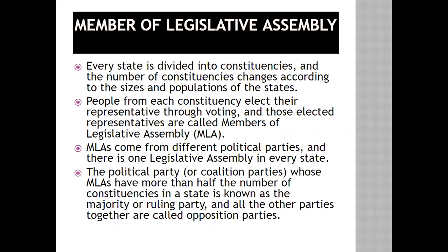Member of Legislative Assembly: Every state is divided into constituencies, and the number of constituencies changes according to the sizes and population of the states. People from each constituency elect their representative through voting, and those elected representatives are called Members of Legislative Assembly. MLAs come from different political parties and there is one legislative assembly in every state. The political party or coalition party whose MLAs have more than half the number of constituencies in a state is known as the majority or ruling party, and all the other parties together are called the opposition parties.